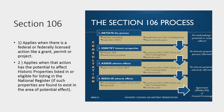Section 106 applies when two thresholds are met. One, there is a federal or federally licensed action like a grant, permit, or project. And two, that action has the potential to affect historic properties listed in or eligible for listing in the National Register of Historic Places.